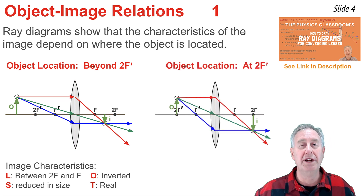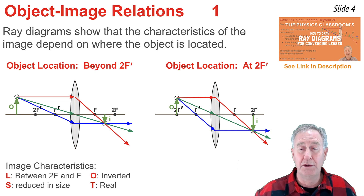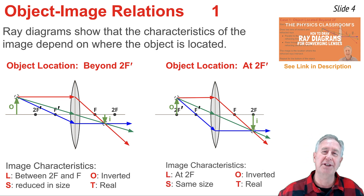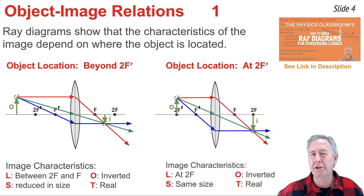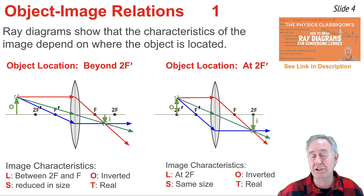Here we see the ray diagram for an object located at the 2F point. When the object is at the 2F point, the image is also located at the 2F position on the opposite side of the lens. The image is upside-down, so the orientation is inverted, and it's the same size as the object. The type of the image is real, since the refracted rays coming through the lens are converging at this image location.